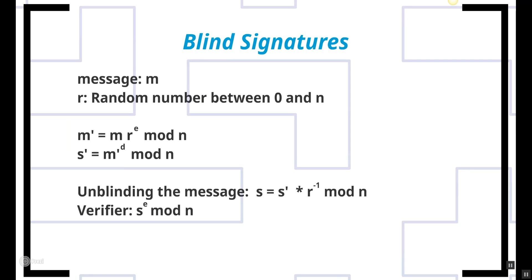What if someone wants to have a message verified as being from them? Say you want to send a message to a bank letting others know you have a note worth $100. You generate message m, pick a random number r between 0 and n, and generate m prime, which is m multiplied by r raised to the e power, taken modulus n. The signer then creates s prime, which is m prime raised to the d power mod n. The signer has no idea what the original message is — only you can decrypt that information.